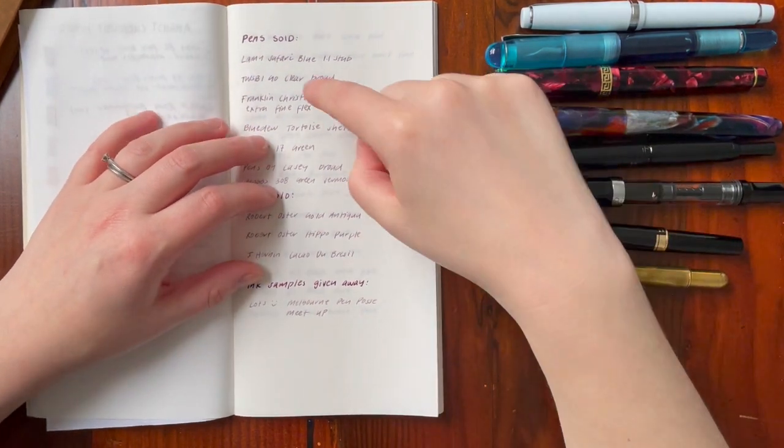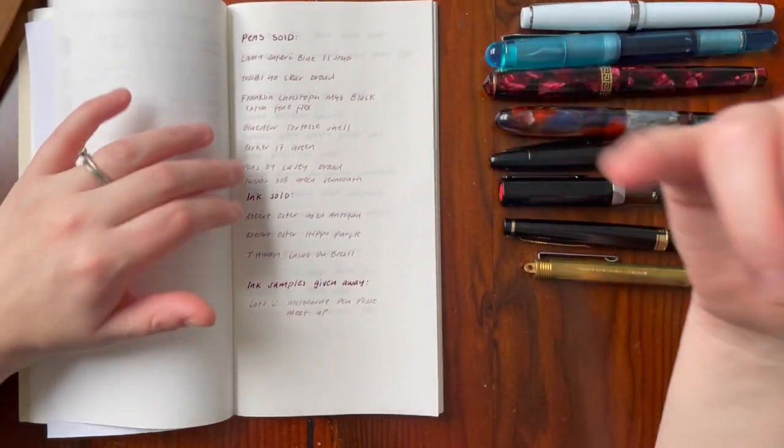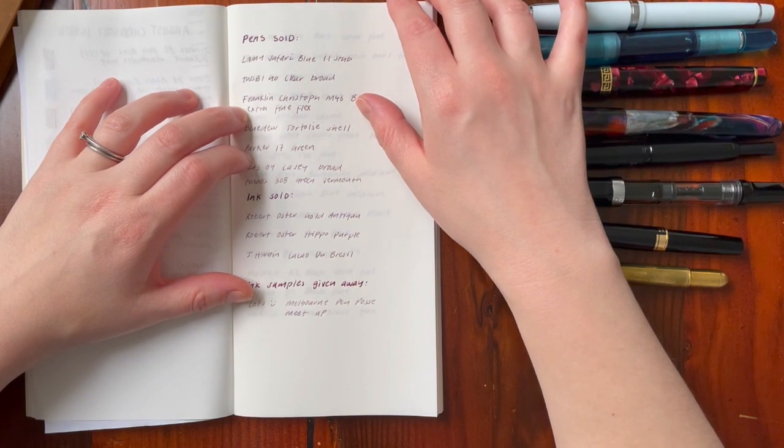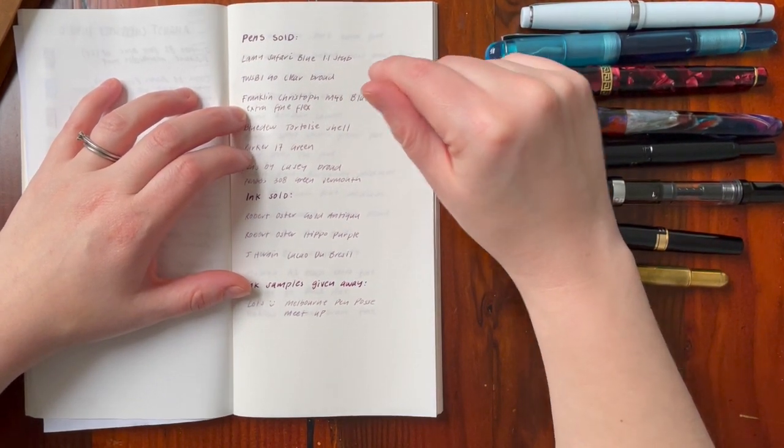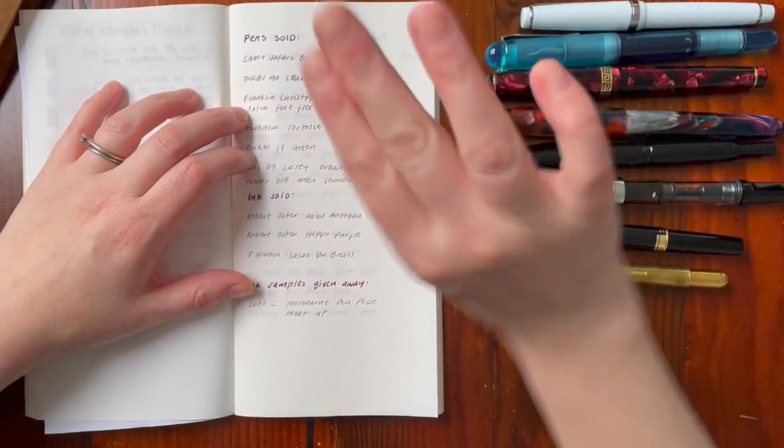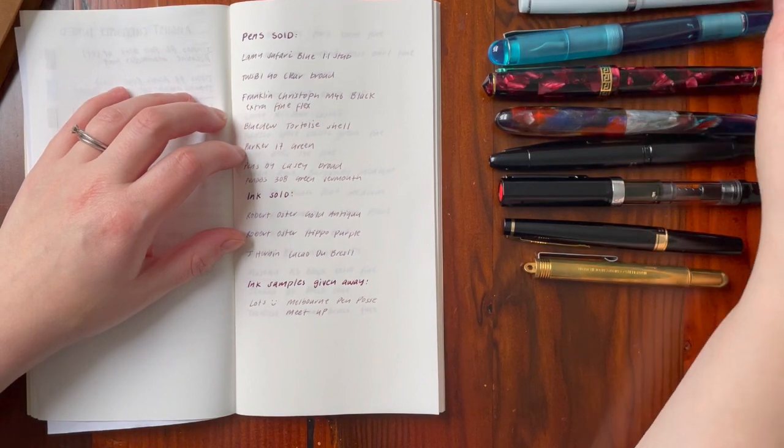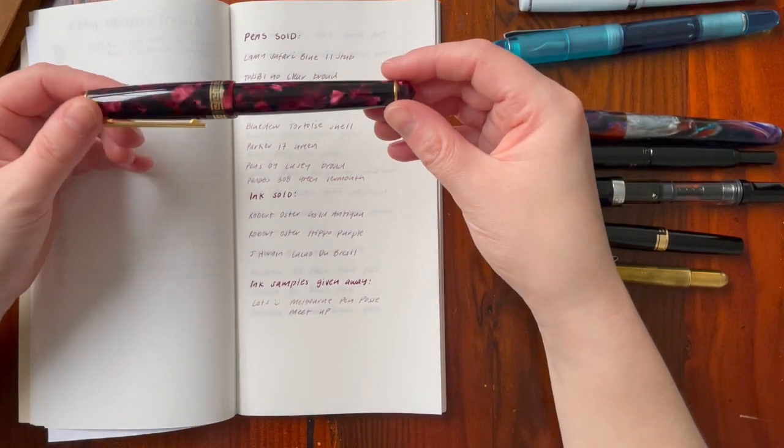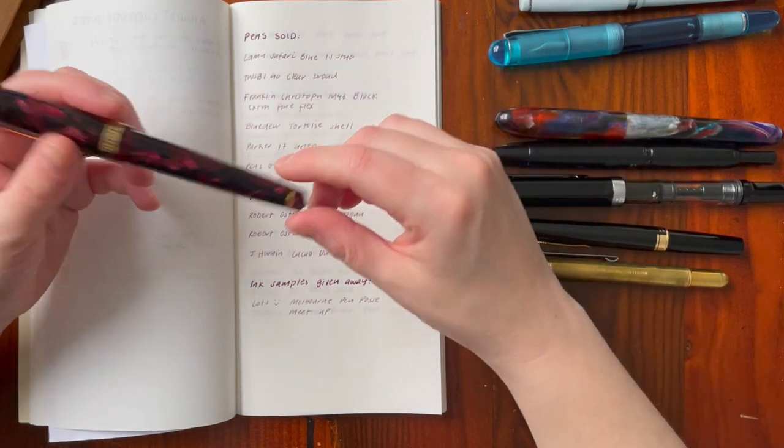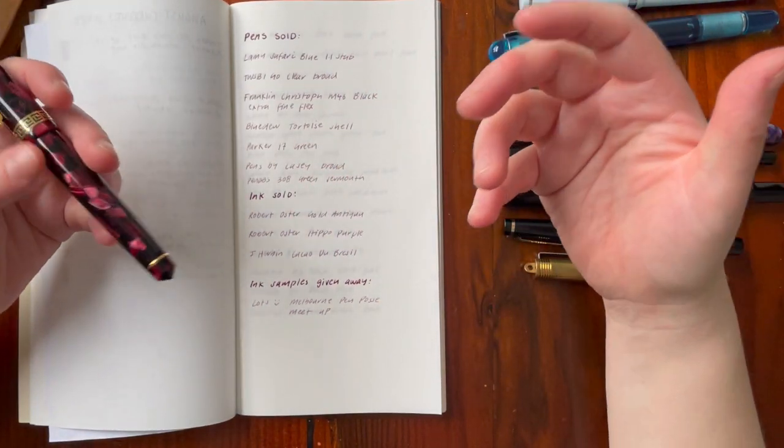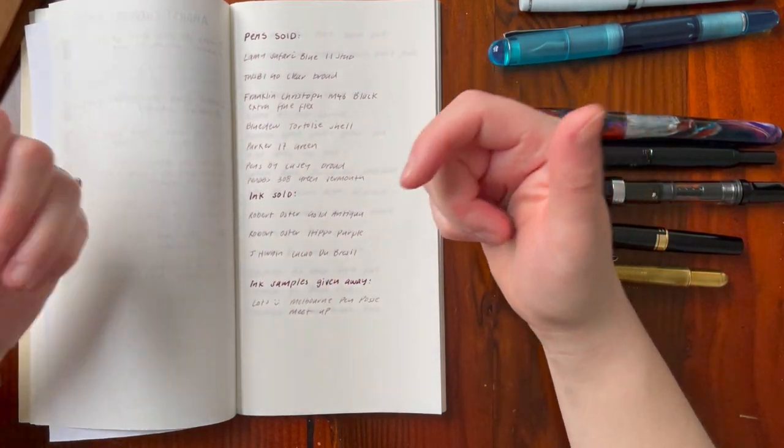As I said before, the Twsbi Go in broad, I just, I'm not enjoying it. The Franklin Christoph pen, I absolutely loved, but it's just not comfortable. It had quite a steep step up and it was just hurting. These two, the Blue Dew and the Parker 17, I bought when I bought this secondhand, and they were a bit kind of impulse buys. The Blue Dew needs a bit of tinkering and I just don't have time. And the Parker, again, I just didn't do enough research. So I was like, I want to give them to someone who will actually use them.